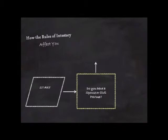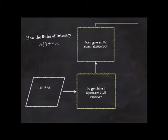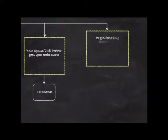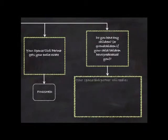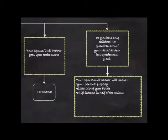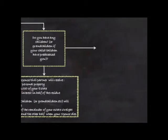If you have a spouse or civil partner and your estate is valued less than £250,000, your spouse or civil partner will get everything. If the value of your estate exceeds £250,000 and you have children or grandchildren and so forth, your spouse or civil partner will get all of your personal property, the first £250,000 of your estate and a life interest in half of the residue. Your children will receive the remaining half of the residue straight away and the other half when your spouse dies. If you do not have any children, your spouse will receive all of your personal property, the first £450,000 of your estate and half of the residue absolutely.